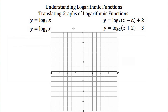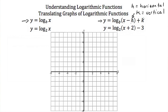Next, let's talk about translating the graphs of logarithmic functions. If we have the parent function y is equal to the log base b of x, then a translated version would be y is equal to the log base b of (x minus h) plus k. This h, because it's inside the logarithm function, gives us a horizontal translation in the positive x direction. k gives us a vertical translation in the y direction. So if I wanted to graph y is equal to the log base 2 of (x plus 2) minus 3, this would mean that my h is negative 2 and my k is negative 3.